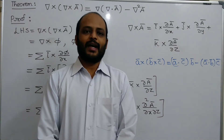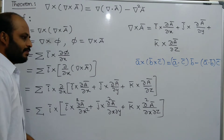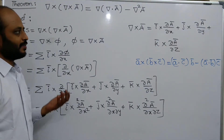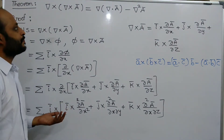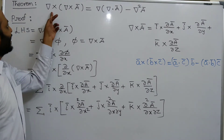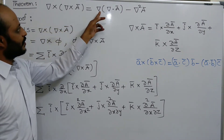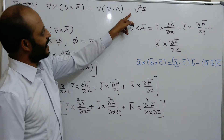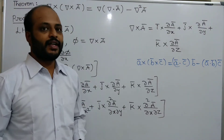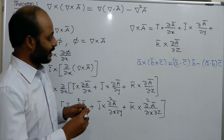Hi, welcome to Surreal Maths Tutorial, Vector Calculus, class number 20. In this class, we discuss some theorems. Let us see the first one. Del cross of del cross A-bar equals del of del dot A-bar minus del squared A-bar, which is a very important identity in vector calculus.